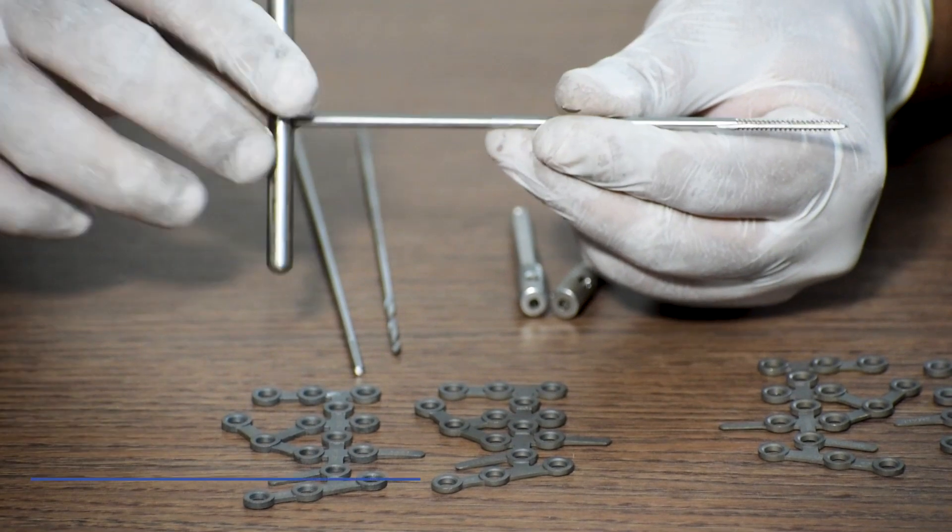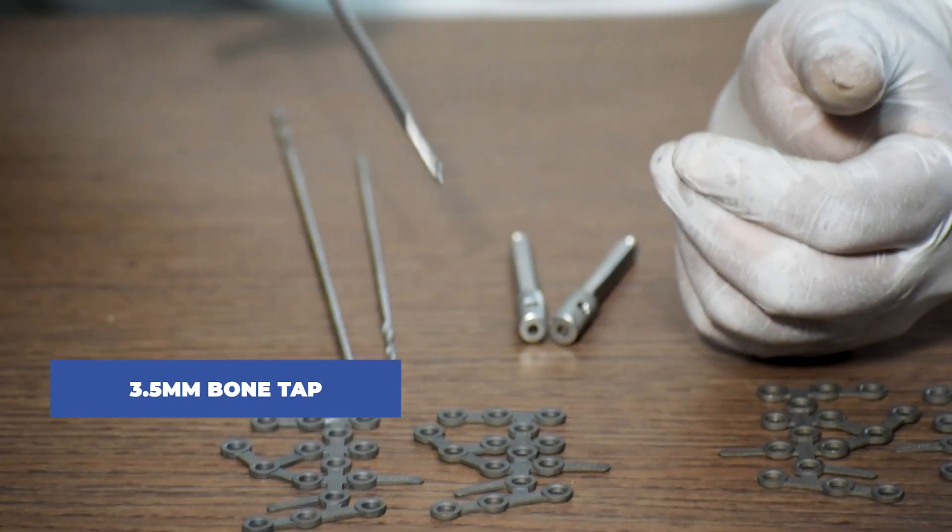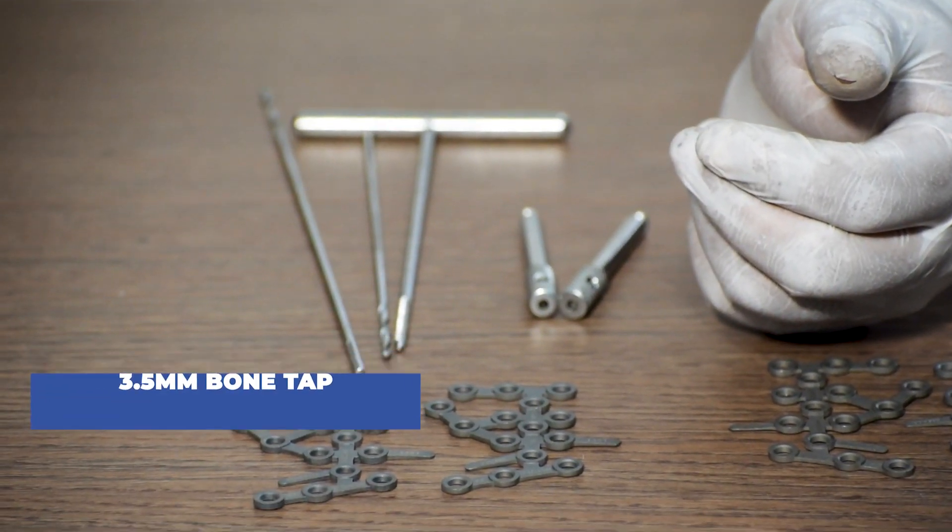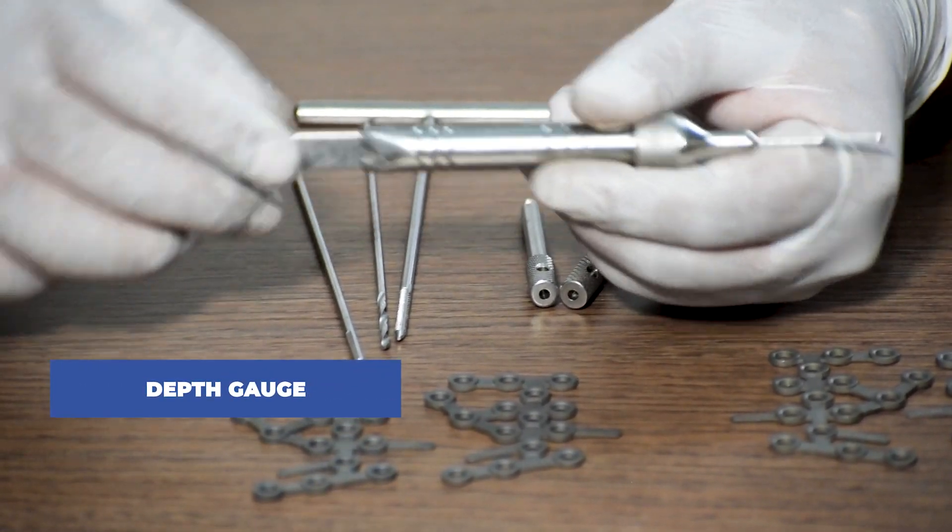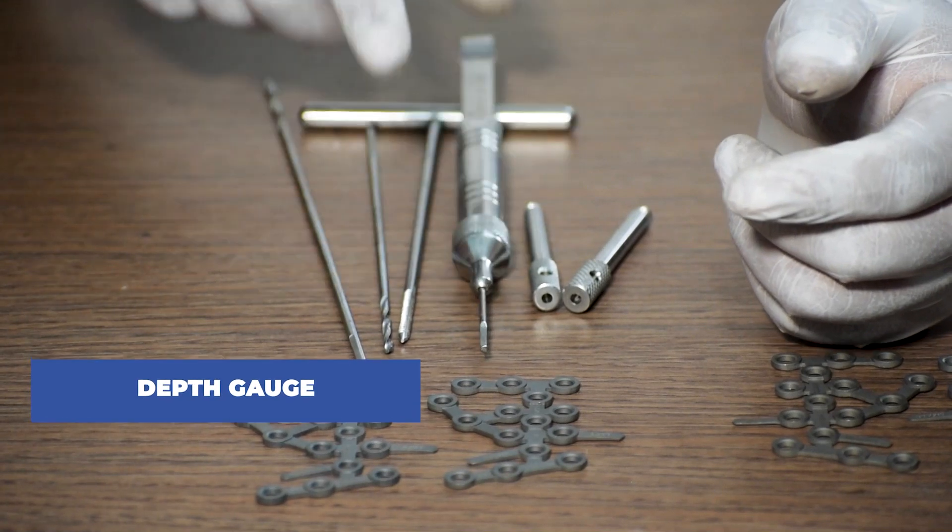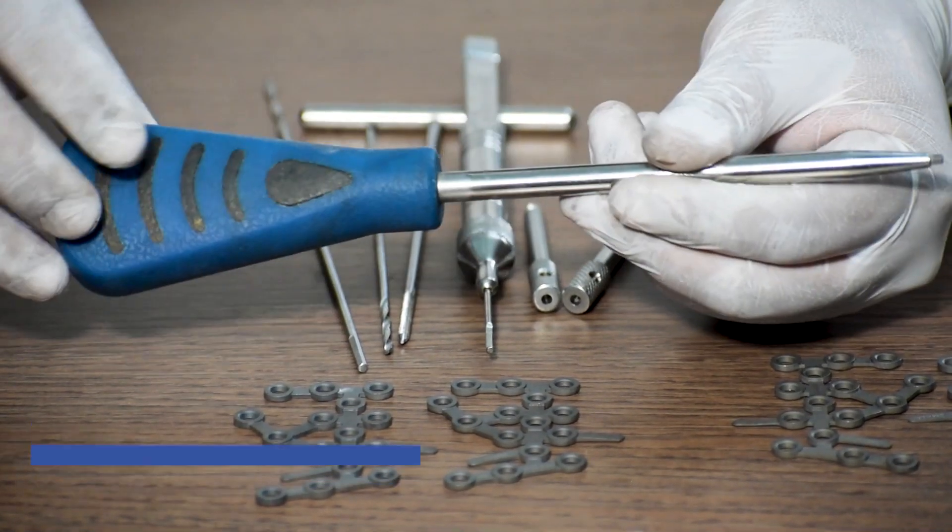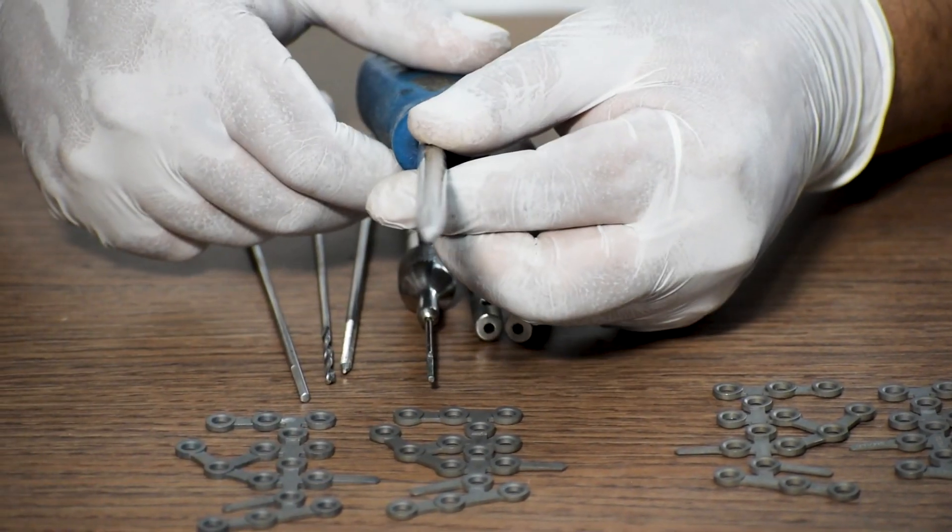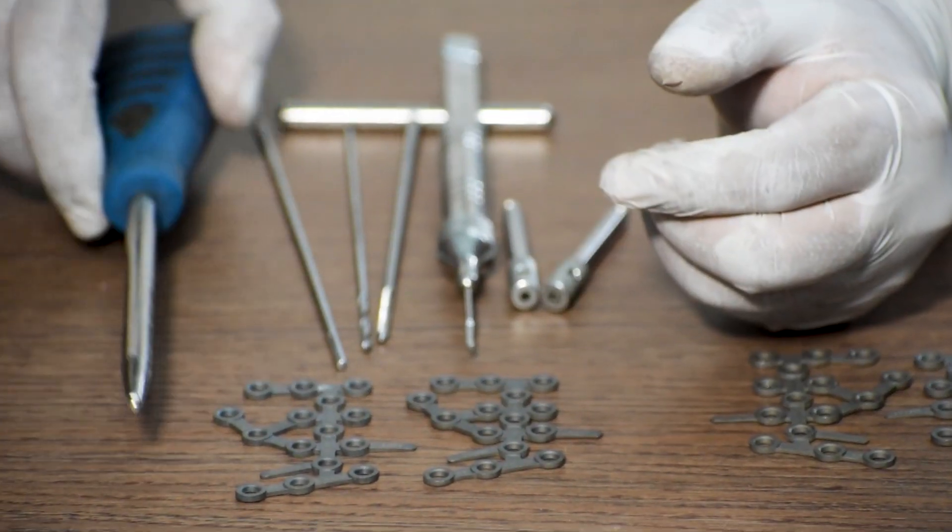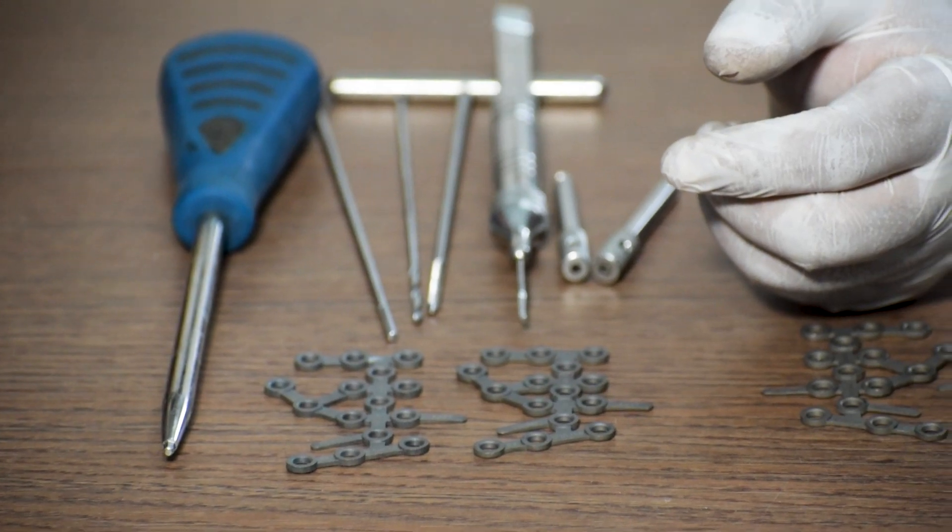Next, 3.5 mm tap for non-locking screws. Then depth gauge in order to measure the length of the screw required. Then 3.5 mm solid screwdriver will be needed.